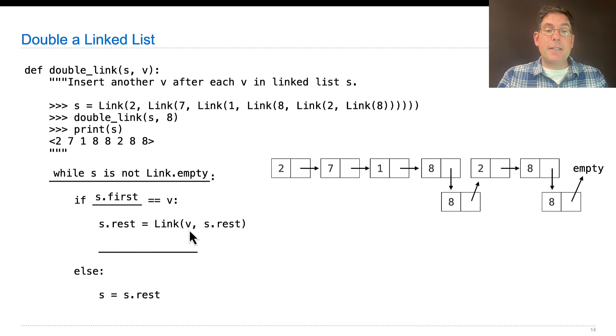If it's v, we build another link with v, install it, and then let's say here we were, we had installed this. Now we have to move on. The way we move on is with s equals s.rest.rest. Very similar to that i plus equals 2 line from the previous example, we want to make sure that we don't process the next thing we just inserted, but instead the next thing in the original list.